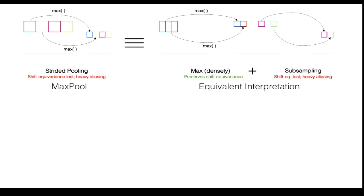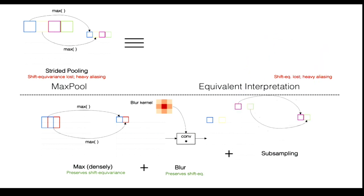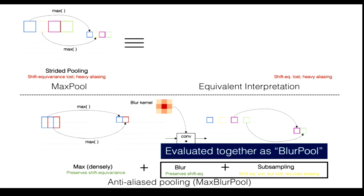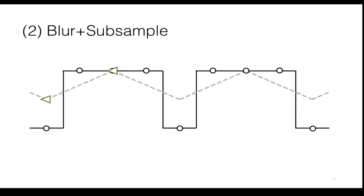The fix is quite straightforward: we keep the dense max operation, insert the appropriate signal processing fix — a blur kernel for anti-aliasing — and then keep the subsampling. This won't be perfect since a finite-sized kernel gives approximate anti-aliasing, but with appropriate choices like 2×2, 3×3, or 5×5 kernels — what people have done in image processing for a long time — you can greatly reduce the loss of shift equivariance. So instead of one line of code, you have two lines, and now you're following signal processing first principles. For our toy signal: run max, low-pass filter it, subsample it, and you're less sensitive to small shifts.